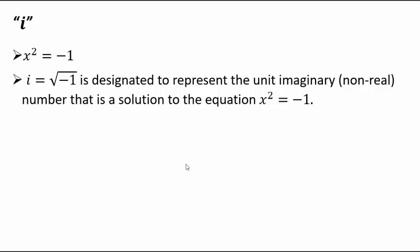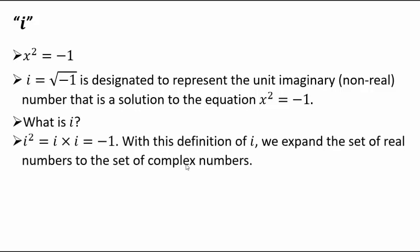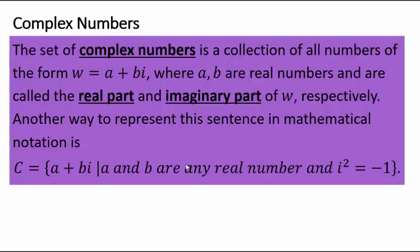Even though we don't understand what √(-1) is, we know its square: i × i = -1. So we just expanded the set of real numbers by adding additional numbers, which leads to the set of complex numbers. Complex numbers are collections of numbers of the form a + bi, where a is called the real part and b is called the imaginary part.